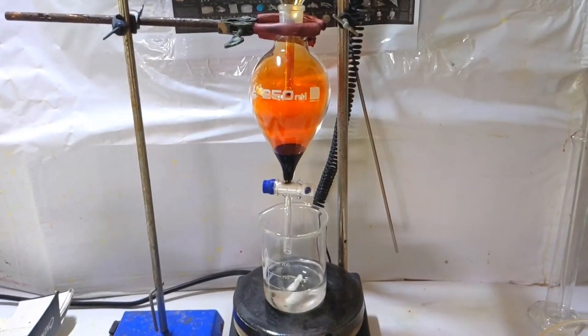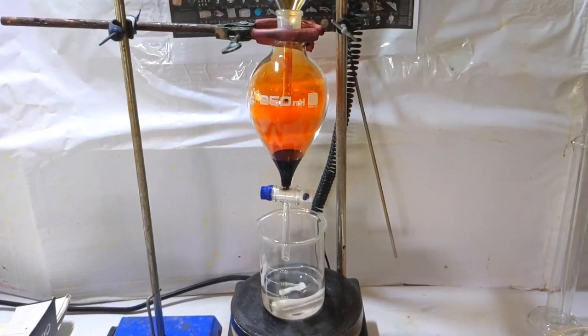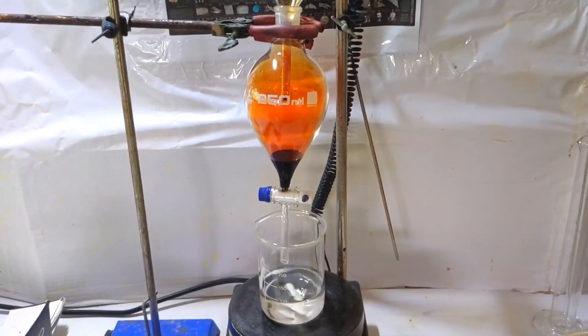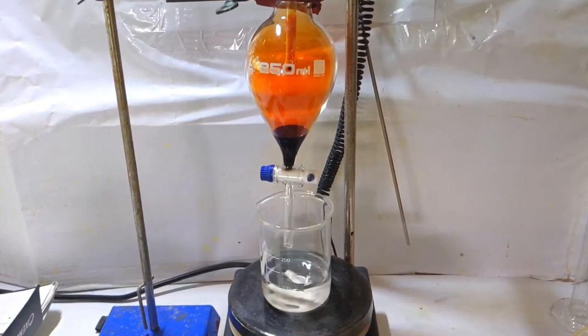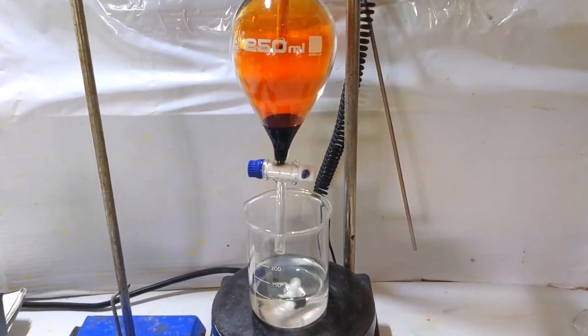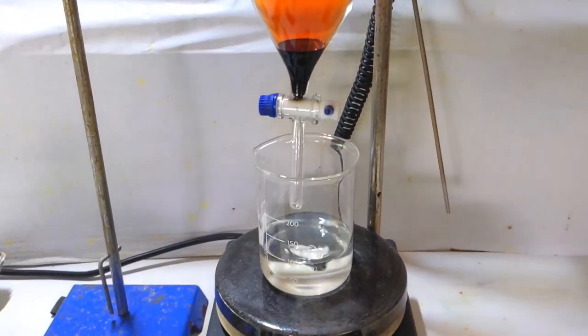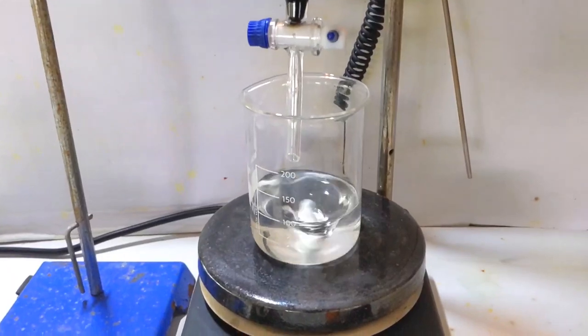Once the solution has cooled down, set up a separatory funnel on top of the beaker and pour in 10 milliliters of liquid bromine into it. Also place a stirring bar in the potassium hydroxide solution and start stirring.